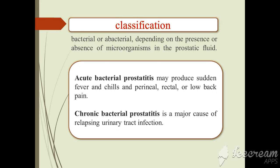Classification: Prostatitis is classified according to the infectious agent — bacterial or abacterial — depending on the presence or absence of microorganisms in the prostatic fluid. Acute bacterial prostatitis might produce sudden fever, chills, and perineal, rectal, or low back pain. Chronic bacterial prostatitis is a major cause of relapsing urinary tract infection.